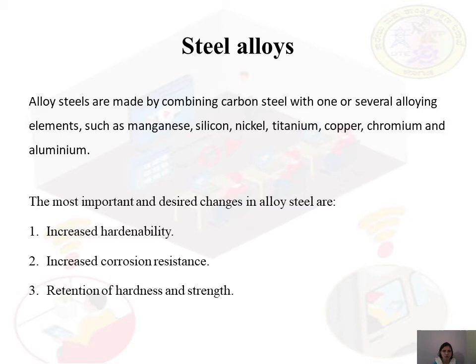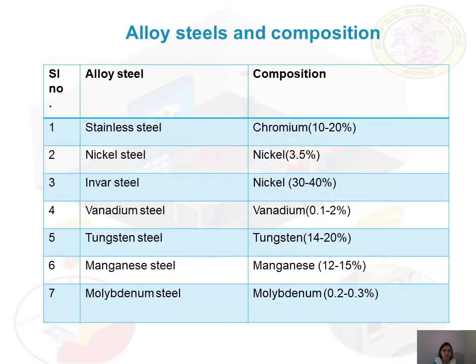There are seven important types of steel alloys. In aluminium alloys there were four types; in steel alloys there are seven: stainless steel, nickel steel, Invar steel, vanadium steel, tungsten steel, manganese steel, and molybdenum steel. The stainless steel contains 10 to 20 percent chromium as its main alloying element.